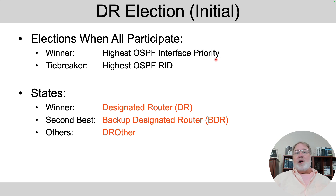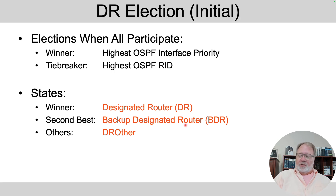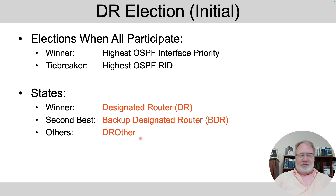If the priority ties, the choice is made based on the highest OSPF router ID numerically. A winner takes over and plays that role as the designated router. We also choose a backup designated router, or BDR, which is ready to take over for the DR should the DR fail. If there are more than two routers in the subnet, the rest have a role called DR other — sometimes called 'druther' because it's easy to pronounce. So those are your three states: DR, BDR, and DR other.